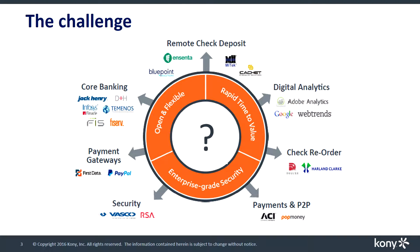Now all banks and credit unions have multiple back-end systems where customer account and transaction data is stored and managed. This includes core banking systems, systems for bill pay, remote deposit capture etc. These back-end systems could be created and supported by different vendors and different teams and are built using different architectures and protocols. In addition, each of these vendors follow their individual product roadmaps and release new versions of their software on a frequent basis.